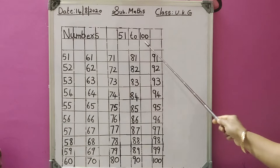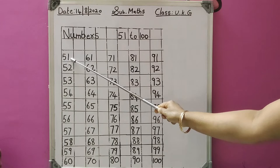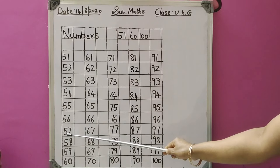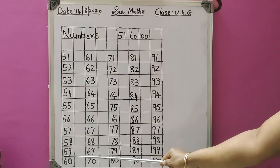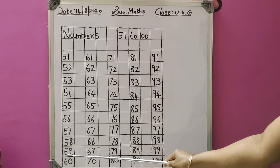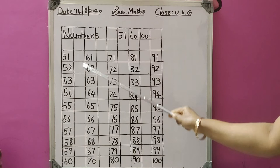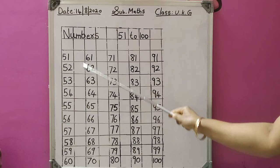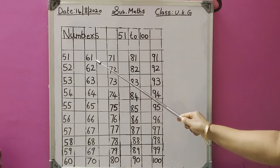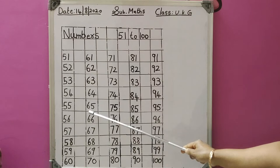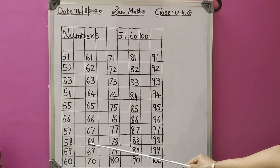Listen carefully children — after writing the heading, leave 1 line, then start in the next line: 51, 52, 53, 54, 55, 56, 57, 58, 59, 60. After 59: 60.